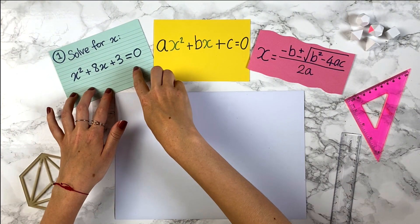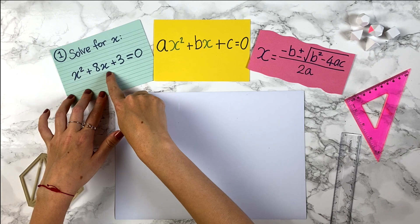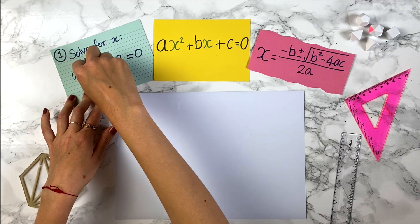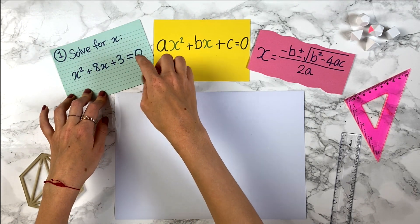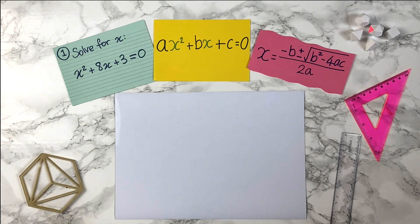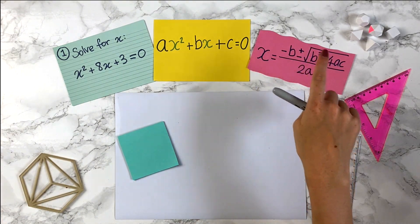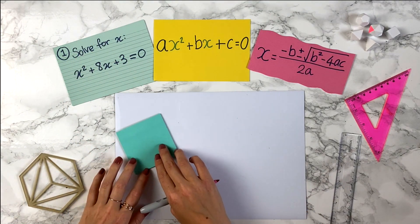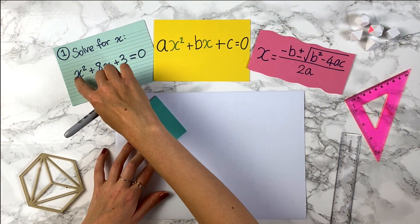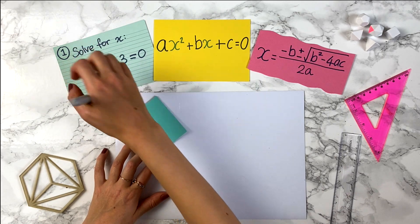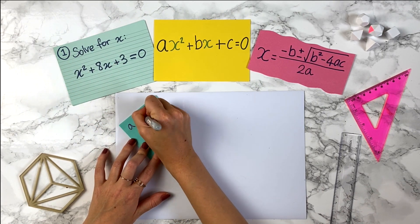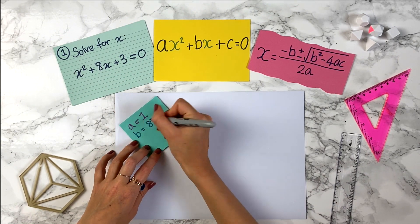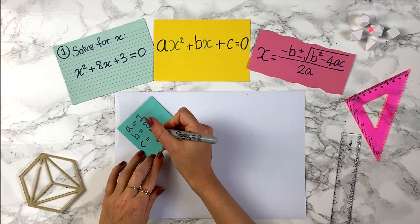So what this question is asking us to do is find the values of x — x stands for a number. We want to find numbers that x can be such that if you put that number squared, plus 8 times that number, plus 3, you get 0. The first thing to do is identify what the a, b, and c values are in this quadratic expression on the left-hand side. So a is the number before x², and it's sort of an invisible one here, so a equals 1. And we have b equals 8 and c equals 3.